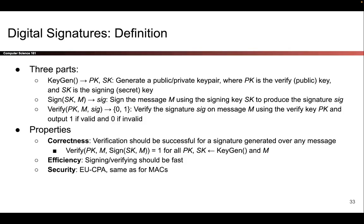More formally, a digital signature scheme is defined using three functions. First, key generation: given a request for a key pair, it outputs a public key and a corresponding secret key together. Second, the signing algorithm takes in the secret key and a message and outputs a signature on that message. Finally, the verify algorithm takes in a public key, a message, and a signature, and returns true if the signature is valid on the message, or false if it is not.